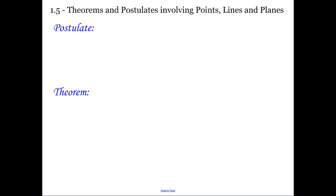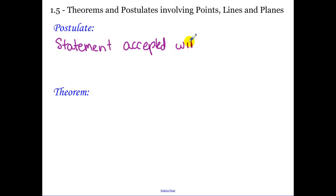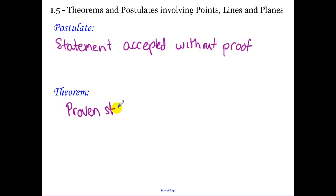Today we're going to be talking about theorems and postulates involving points, lines, and planes. A postulate is a statement that's accepted without a proof, and a theorem is a proven statement. We use postulates, theorems, and definitions to prove theorems, and that's basically the basis of geometry.